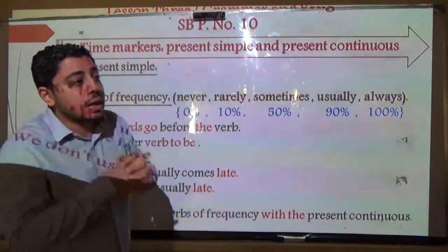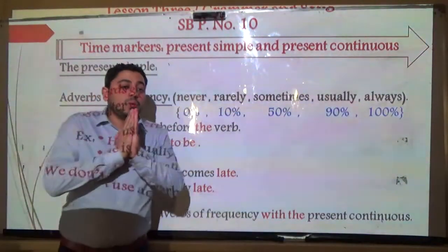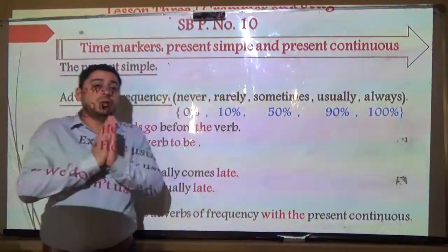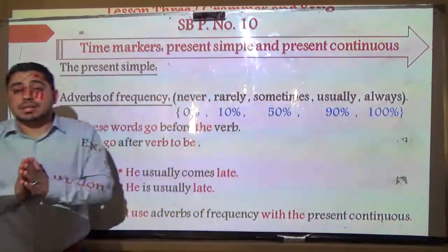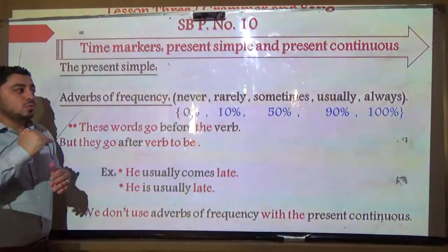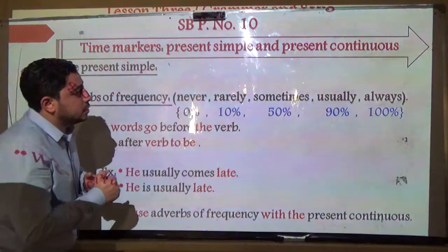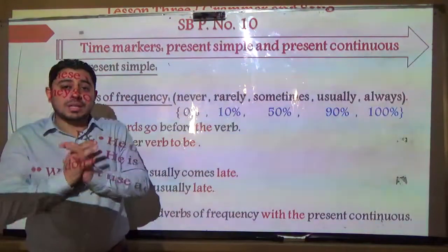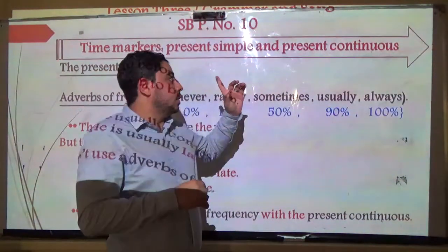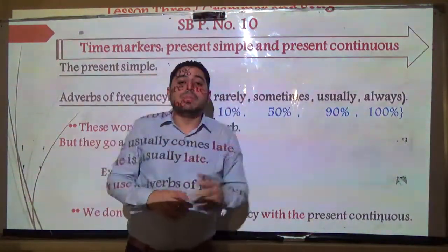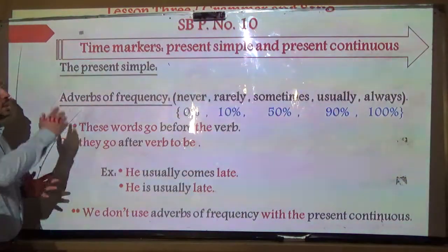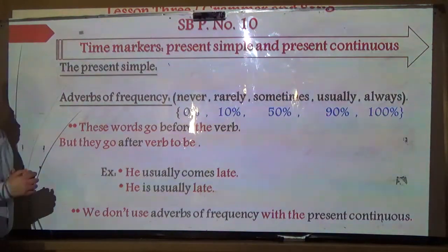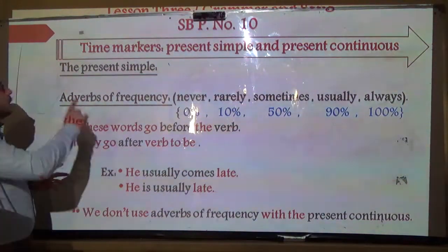We said the present simple uses the first form of the verb, and we add S or ES to a singular subject, but not to other subjects like I, we, you, or they. And for the present continuous, its form is: to be (am/is/are) plus verb plus -ING.